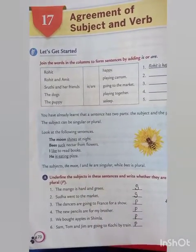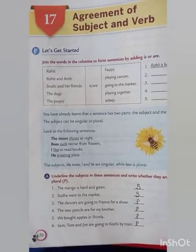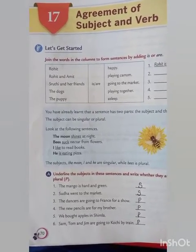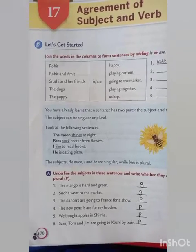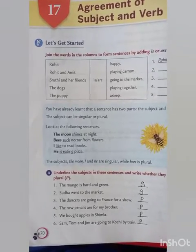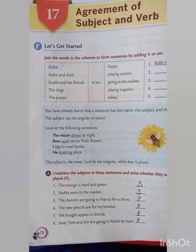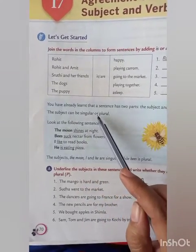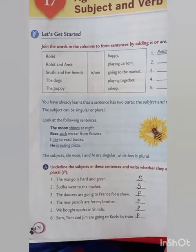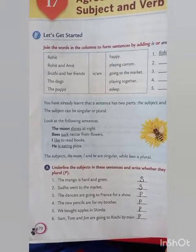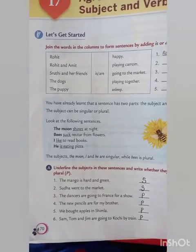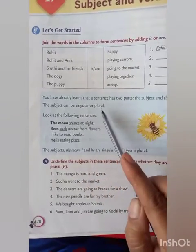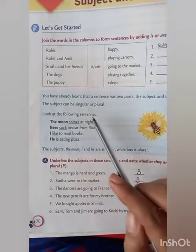As you already know, there are two parts of a sentence. First is subject and the other part is predicate. So the subject can be singular or plural. Now when we talk about the subject, the subject can be singular or plural. Look at the following sentences.